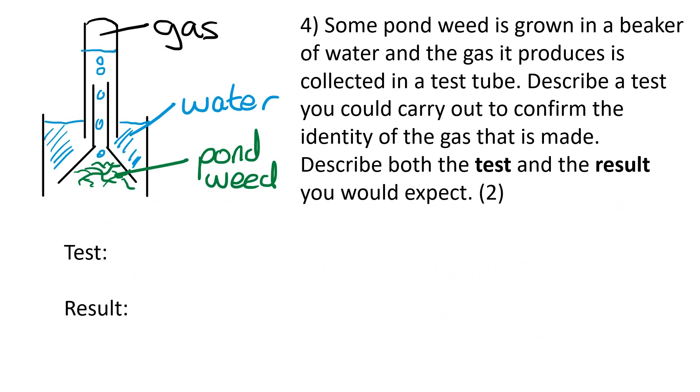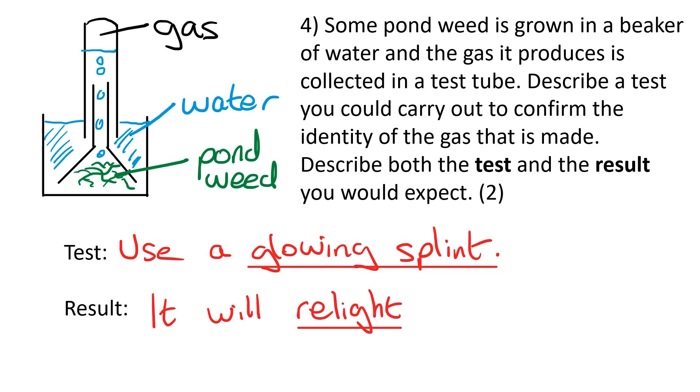Question 4. Some pond weed is grown in a beaker of water and the gas it produces is collected in a test tube. Describe a test you could carry out to confirm the identity of the gas that is made. Describe both the test and the result you would expect. So first of all you need to remember that any plant that is photosynthesizing is going to be producing oxygen, so that's the gas we're going to be testing. So the test would be to use a glowing splint, and the result is it relights a glowing splint.